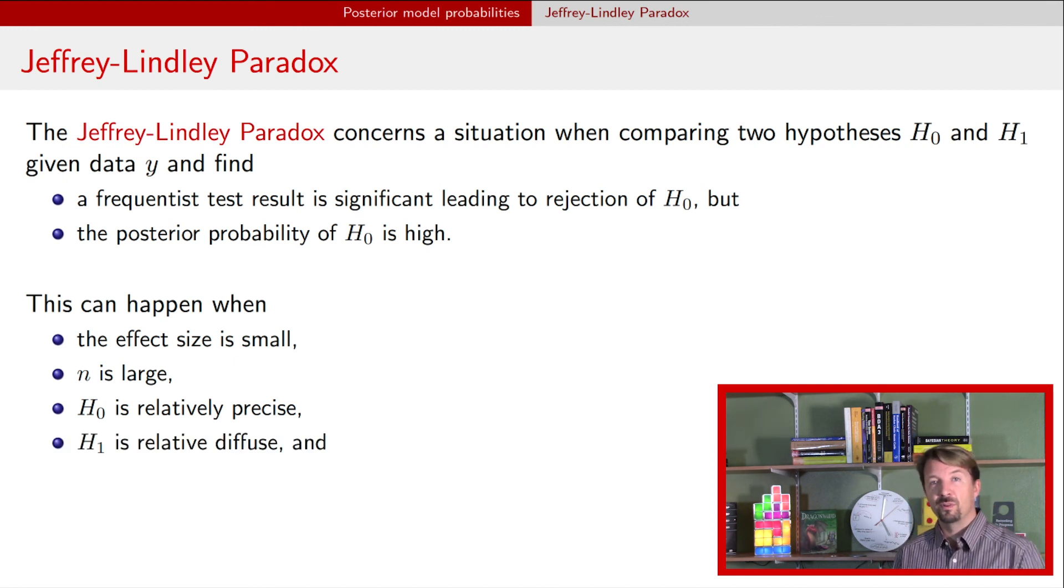The alternative, in contrast, has to be relatively diffuse. So in our example, the alternative said that it's just not 0.5. And our prior distribution over that parameter said it's uniformly distributed on that probability space.